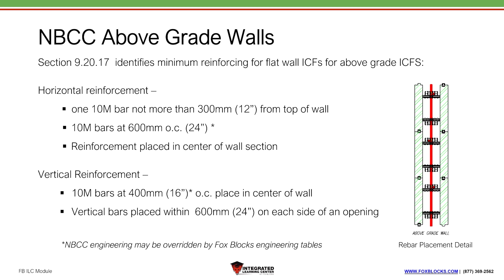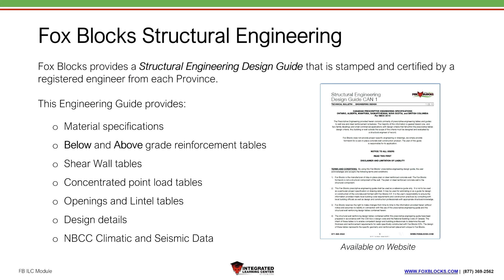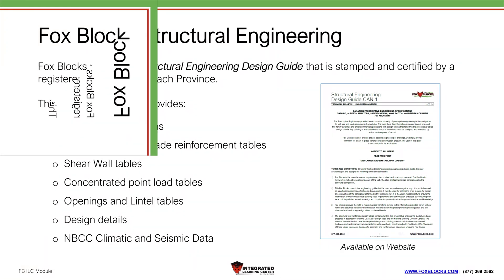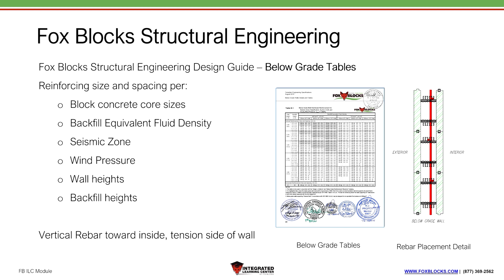The FoxBlocks structural engineering design guide is a book available on our website with an engineer stamp for each province. It covers all material specifications, below and above grade reinforcement tables, shear wall tables, concentrated point load tables, openings and lintel tables, design details, and the National Building Code of Canada climatic and seismic data. You can download it from our resource center on our website. For below-grade tables, the charts are easy to follow — they cover concrete core sizes, all block sizes for below grade (6, 8, and 10 inch), backfill fluid density, seismic zone, wind pressure, wall heights, and backfill heights.